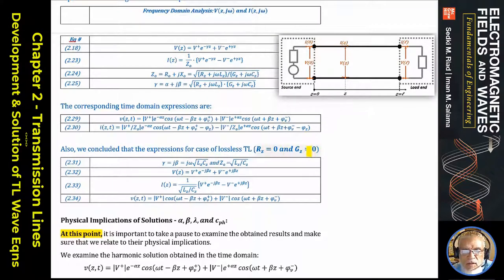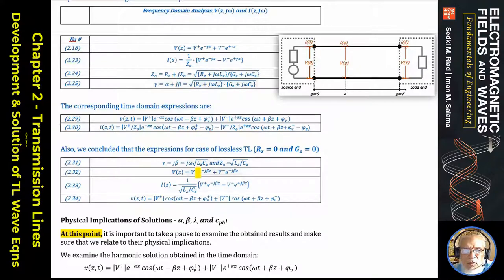For the lossless line case with R equals zero and G equals zero, the expression for gamma becomes the square root of (j-omega-L)(j-omega-C), making gamma purely imaginary — alpha equals zero, and gamma equals j-omega times square root of LC. Z_naught becomes purely real: square root of L over C, with no imaginary part. In the lossless frequency-domain solution, V equals V+ e^(-j-beta*z) plus V- e^(+j-beta*z), and the current similarly.